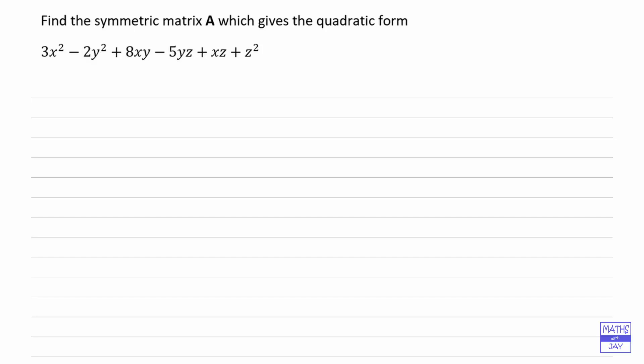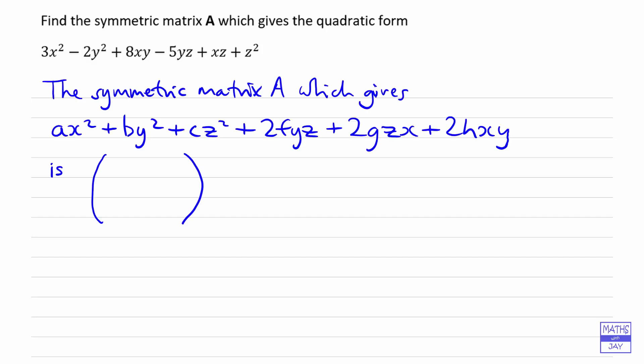We're looking at the general case where we've got ax² plus by² plus cz² and so on. The first thing to do is put in the diagonal of the matrix, so the coefficients of x², y², and z² go along the diagonal. Then, since this matrix is symmetric, the coefficient of yz is going to be shared between the two off-diagonal positions.